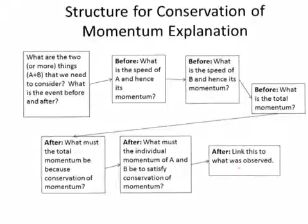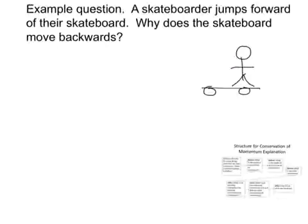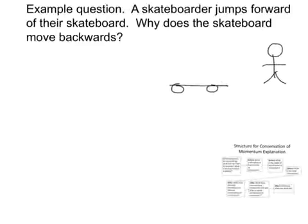To see how that works, we're going to have a little example. My example is: a skateboarder jumps forward off their skateboard. Why does the skateboard move backwards? Let's see if we can illustrate that. The skateboarder jumps forward, and the board moves backwards, and we've got to try and explain that.